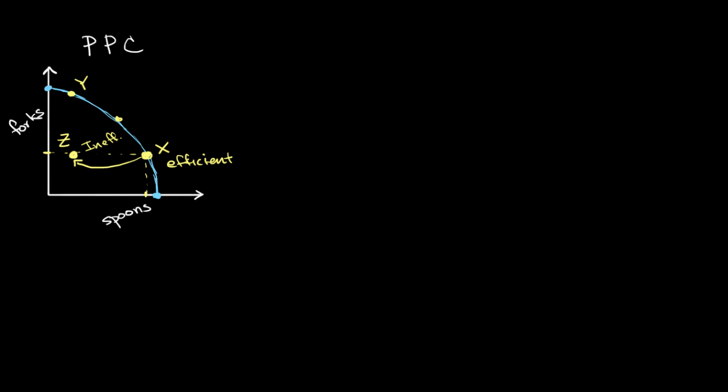And so one question you might have is, what about points that are beyond the production possibilities curve, like point A? Unless you have more inputs, unless you have more land, more capital, more labor, if you don't change the resources here, this is actually going to be an unattainable point for Utenslandia.